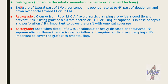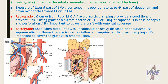Superior mesenteric artery bypass is the second option for acute thrombotic mesenteric ischemia or failed embolectomy. Exposure of the distal part of the superior mesenteric artery is lateral to the fourth part of the duodenum. Retrograde bypass is taken from the right or left common iliac artery, avoiding aortic clamping, providing good flow, and preventing kinking. We can use an 8 or 10 mm Dacron or PTFE graft, or vein graft in case of sepsis. It is important to cover the graft to avoid enteric fistula.